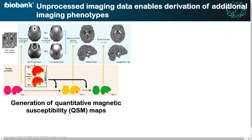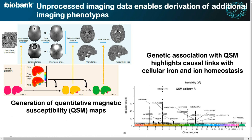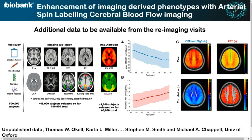Because UK Biobank tries to collect data in as raw a form as possible, it makes it available to researchers who are interested in processing it, enhancing it, and providing it back to the community as a new kind of derived phenotype. One such effort was led by Carla Miller and her group in Oxford for generation of quantitative magnetic susceptibility maps (QSM) using secondary processing of downloaded UK Biobank data. With these, they could perform an even more powerful GWAS study, which extended the previous observations with T2-star to identify a much richer set of genes, again linking back to iron and iron homeostasis in the brain as an index of neurodegeneration.